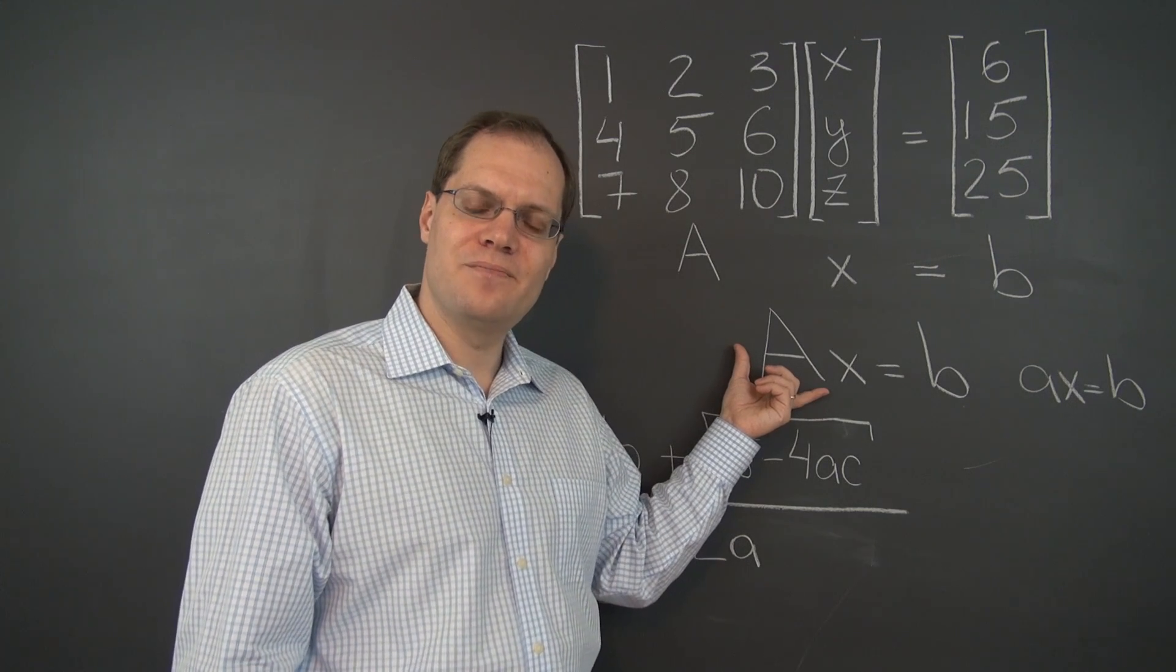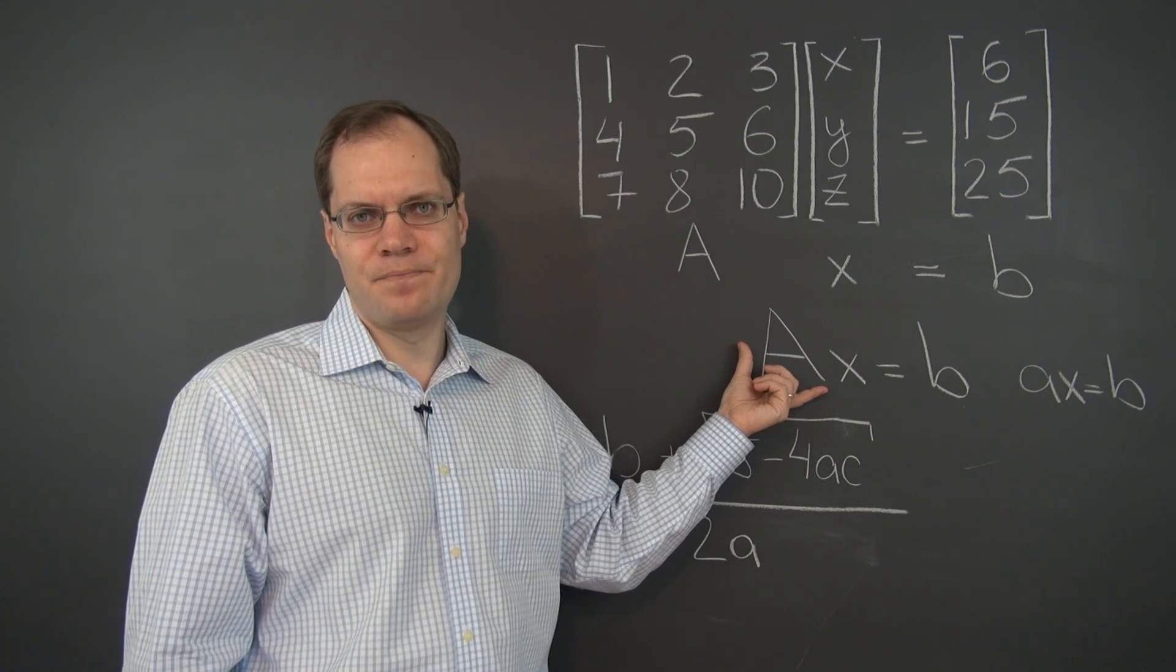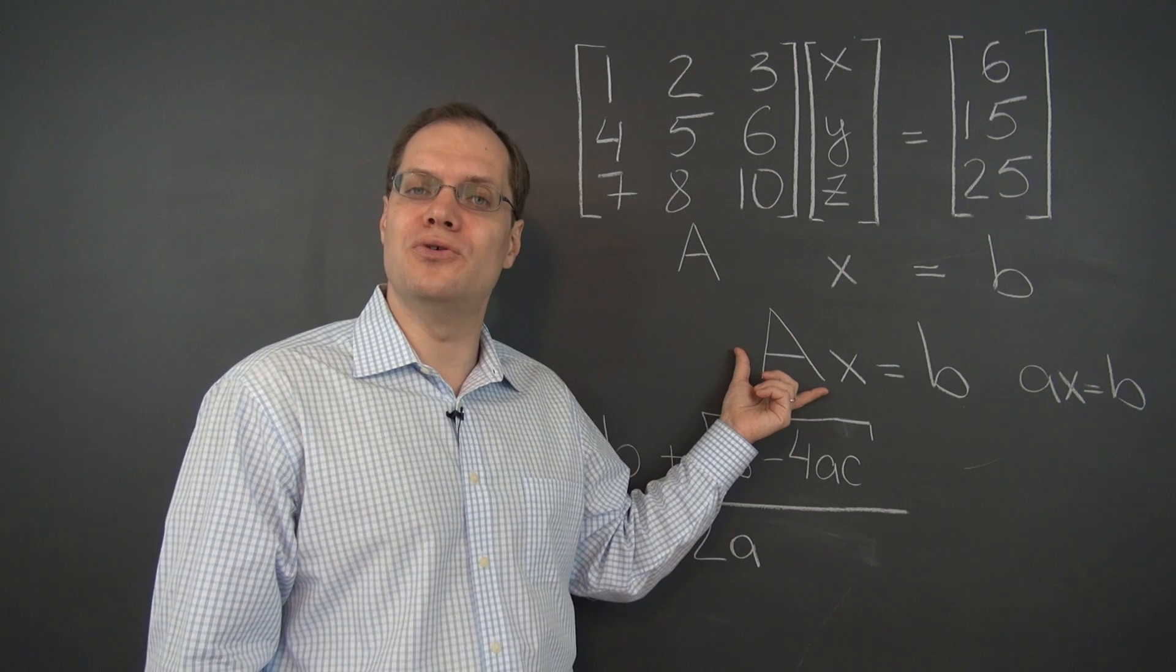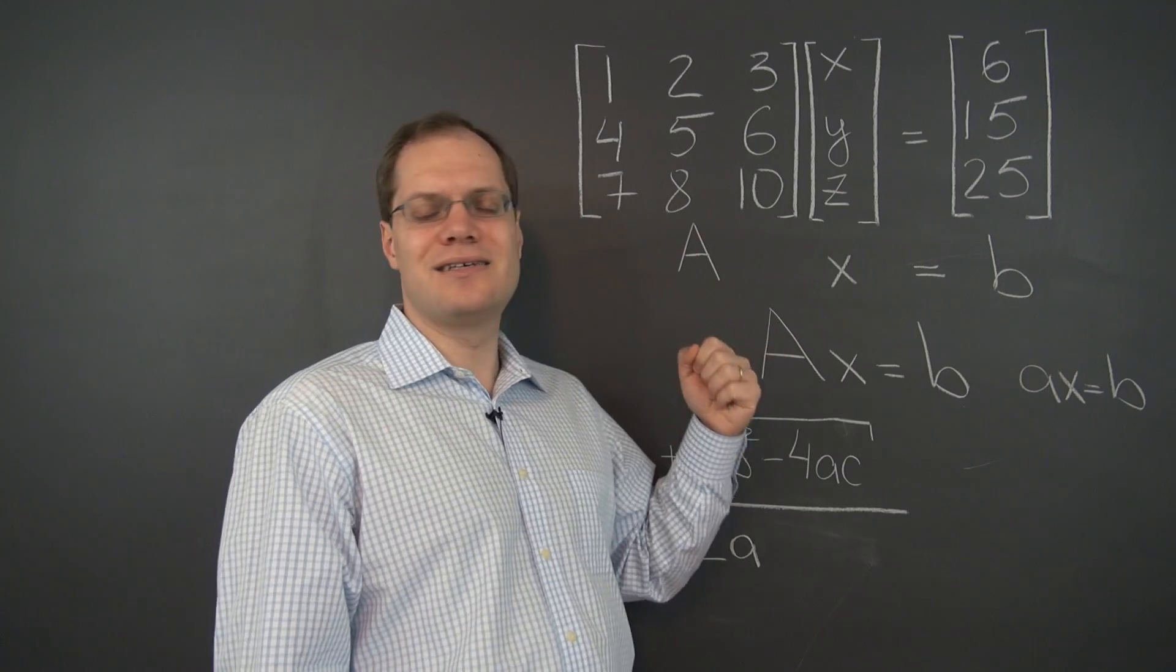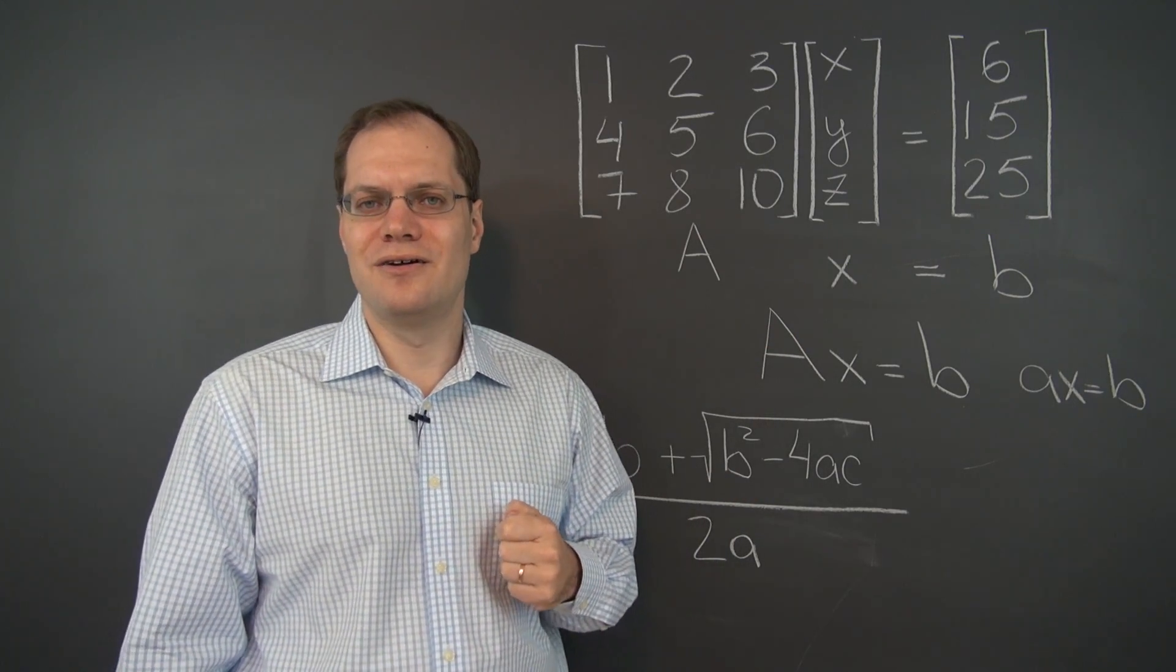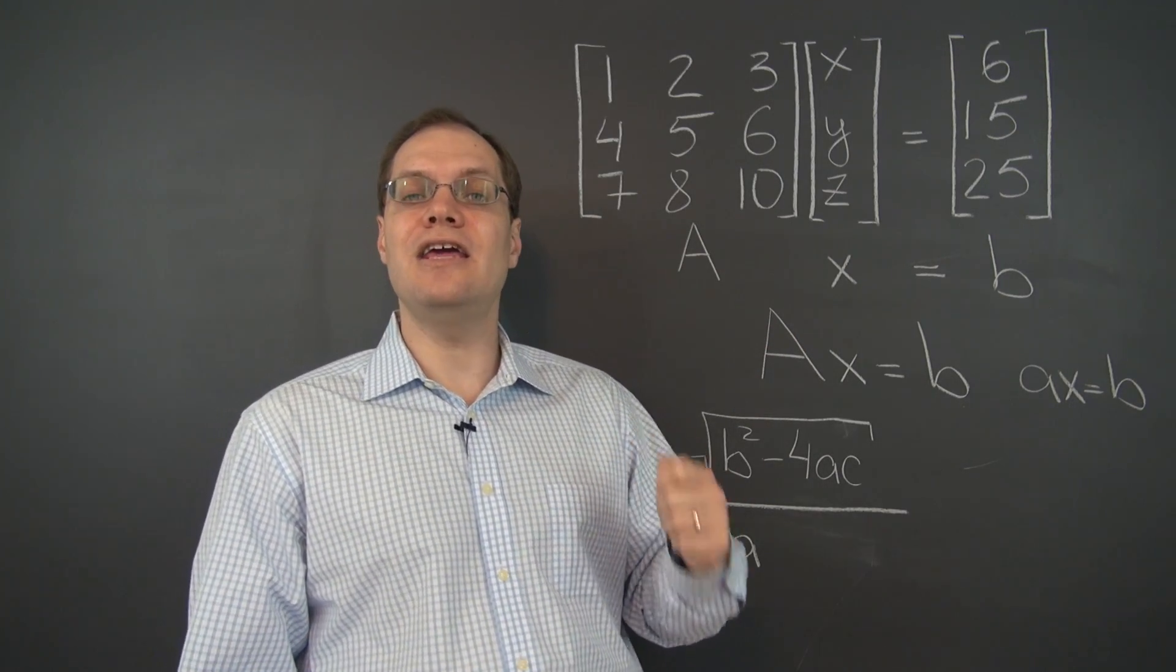In fact, we will think of it as dividing both sides by A. And more importantly, when we write code, we'll be able to write very compact code in which we'll say that X equals B over A. Or more precisely, A inverse B.